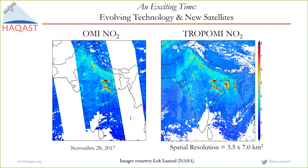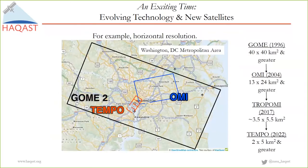We haven't had such high spatial and temporal resolution before. When I finished graduate school in the late 1990s, the first satellite trace gas data came from GOME, with a very coarse footprint of about 40 by 40 kilometers squared or larger. The next was OMI, then TROP-OMI, and then TEMPO will launch. The spatial footprint is improving to suburban-scale resolution. TEMPO in red will have very fine spatial resolution with quite a few pixels even within the District of Columbia.